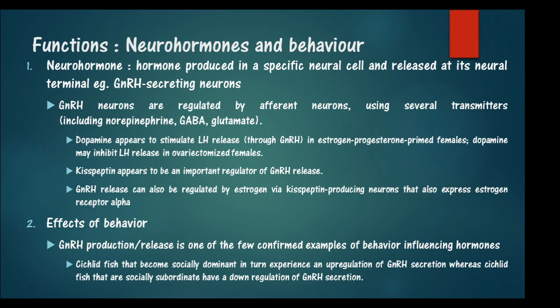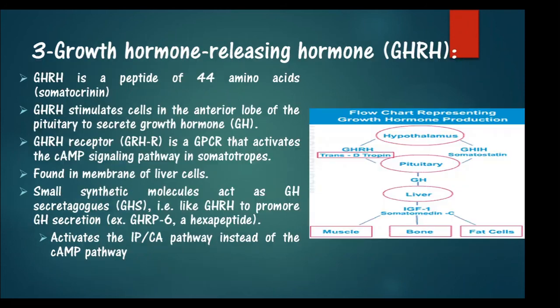GnRH release can also be regulated by estrogen via kisspeptin-producing neurons that express estrogen receptor alpha. Additionally, GnRH production or release is one of the few confirmed examples of behavior influencing hormones. For example, in the cichlid fish, social dominance is associated with upregulated GnRH secretion, whereas social subordination is associated with downregulation of GnRH secretion.